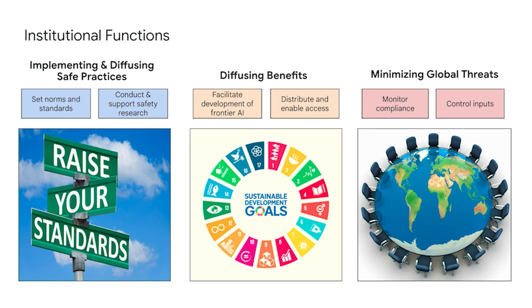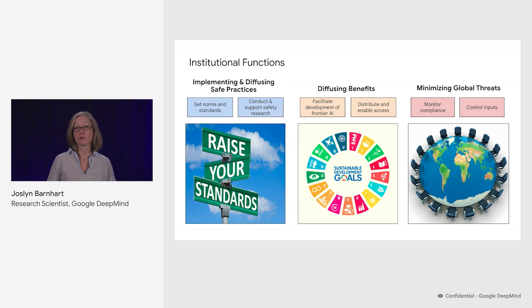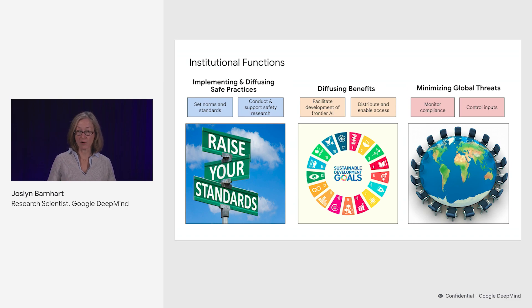On the path to highly beneficial AGI, it is likely we will not only need institutions to implement and diffuse safe practices, but also institutions to help diffuse the benefits of very powerful AI — for instance, ensuring that access to and development of these models minimizes economic inequality. We could also think about institutional approaches to minimizing global threats from advanced AI: ensuring that states use AI systems in trustworthy and safe ways, potentially through treaties, and monitoring compliance with those treaties.